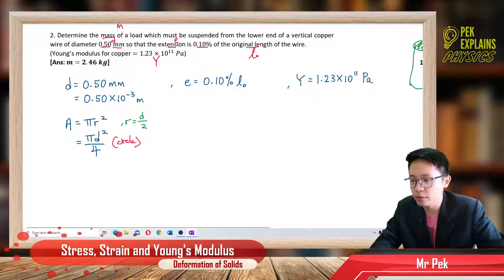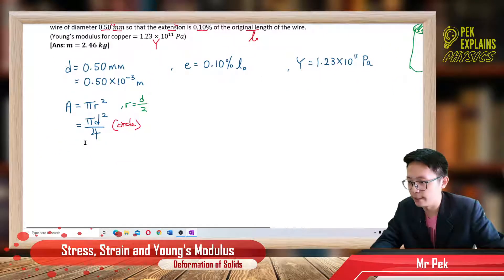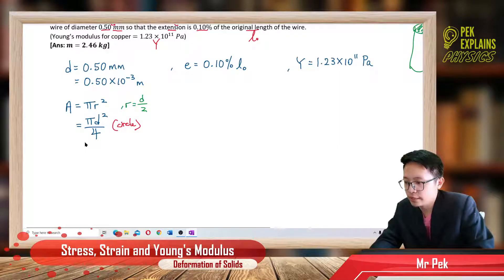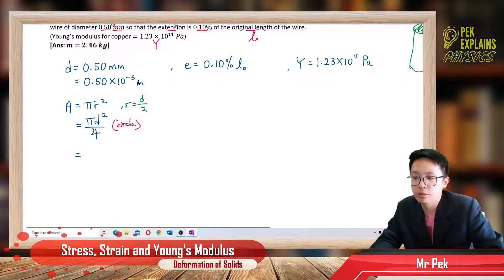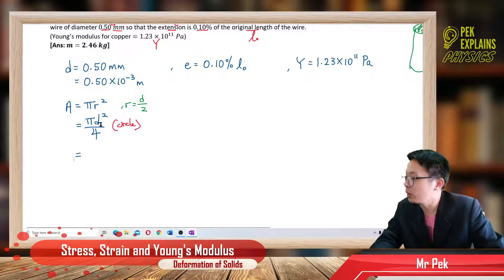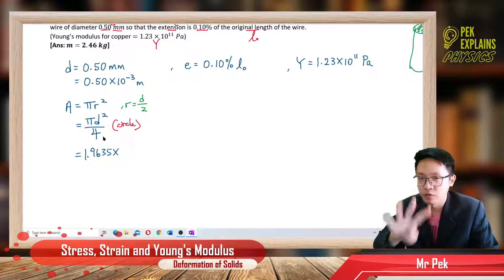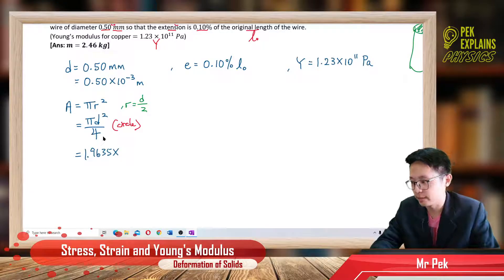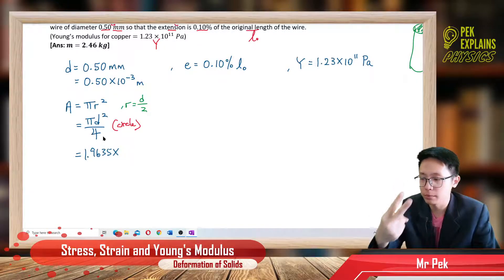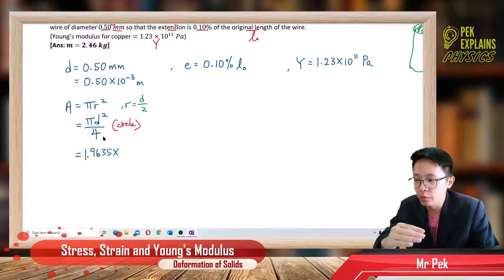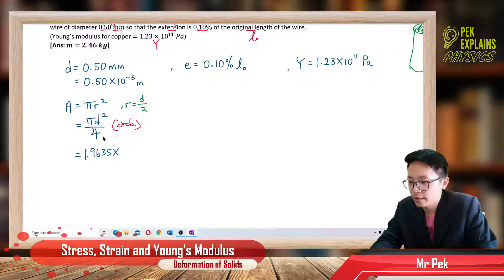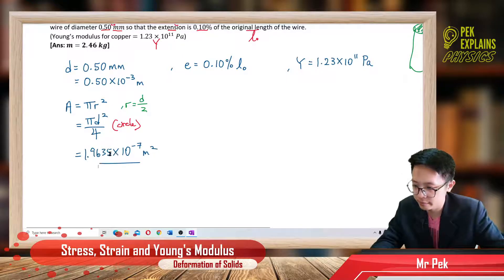Let's find the cross-sectional area. Substitute the diameter — make sure it's in SI units. When you substitute in SI units, what you get is 1.9635 × 10⁻⁷ m². Please maintain at least 4 decimal places before arriving at the final answer; only change to 2 decimal places at the final answer. So the cross-sectional area is 1.9635 × 10⁻⁷ m².